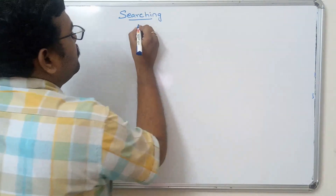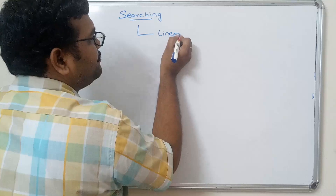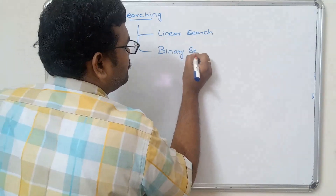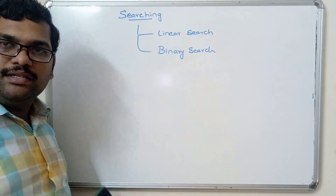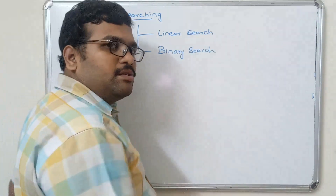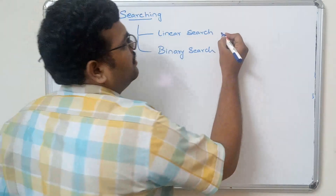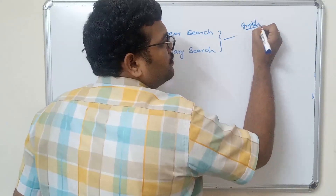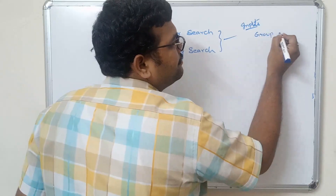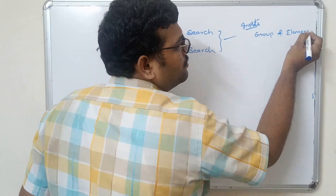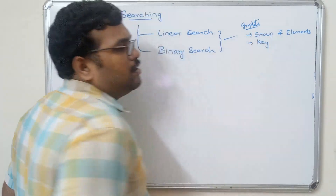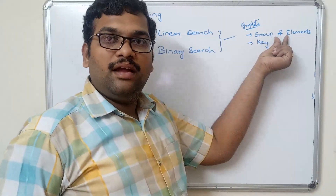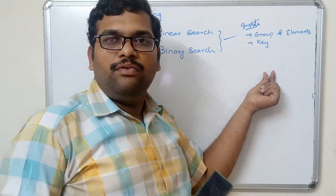So there is linear search and binary search. What are the inputs we need to implement linear and binary search? We need a group of elements and the key element to be searched. We have to search for this key in the group of elements and print whether the key is found or not.